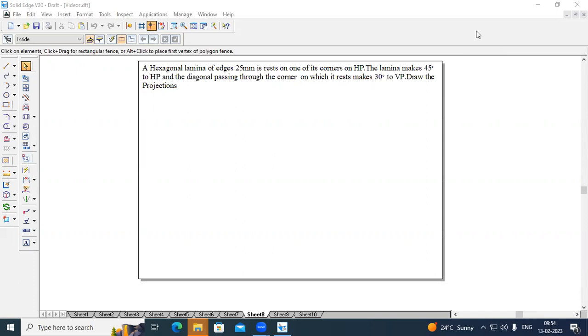And the problem is, hexagonal lamina of just 25 mm rests on one of its corners on HP. The lamina makes 45 degrees to HP, and the diagonal passing through the corner on which it rests makes 30 degrees to VP. When this diagonal is passing through the corners, we are going to get a beta angle. So, let's see how to solve this particular problem.